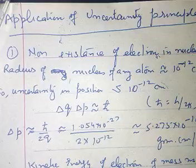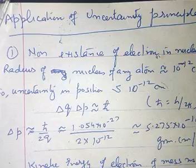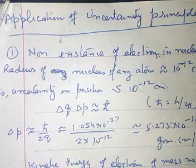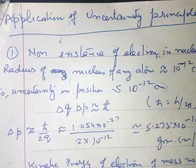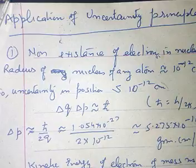First application we will discuss the non-existence of electron in the nucleus. Now we know that the radius of the nucleus of any atom is of the order of 10 raised to the power minus 12 centimeter. So that if an electron is confined within a nucleus, the uncertainty in position must not be greater than 10 raised to the power minus 12 centimeter. So according to uncertainty principle,